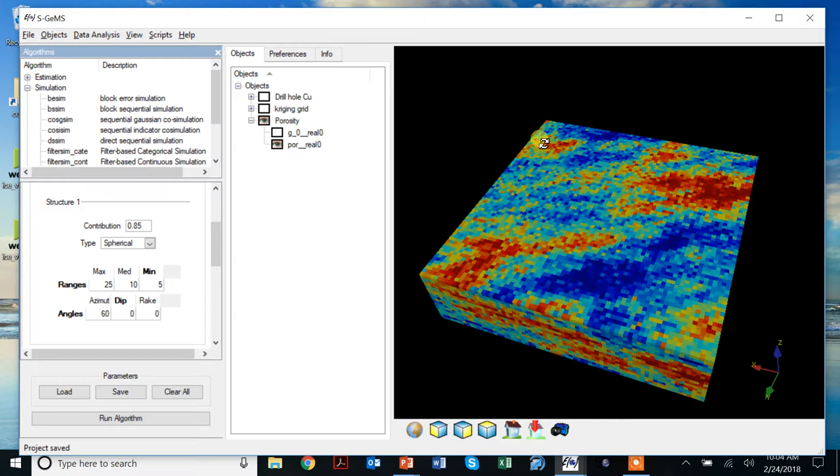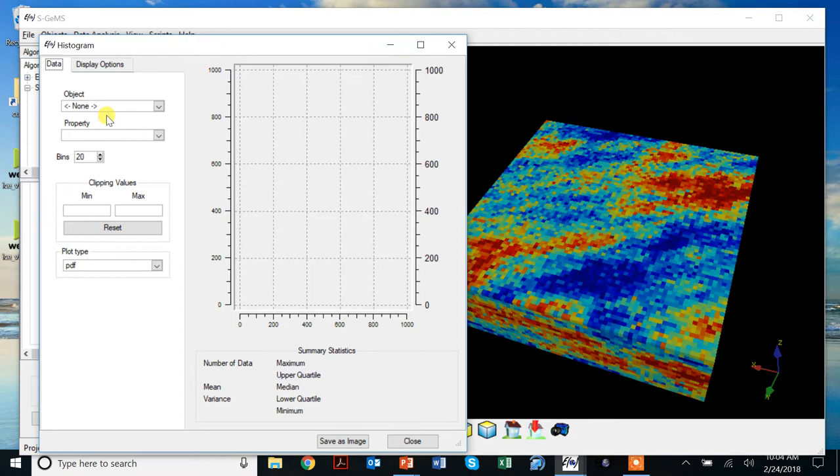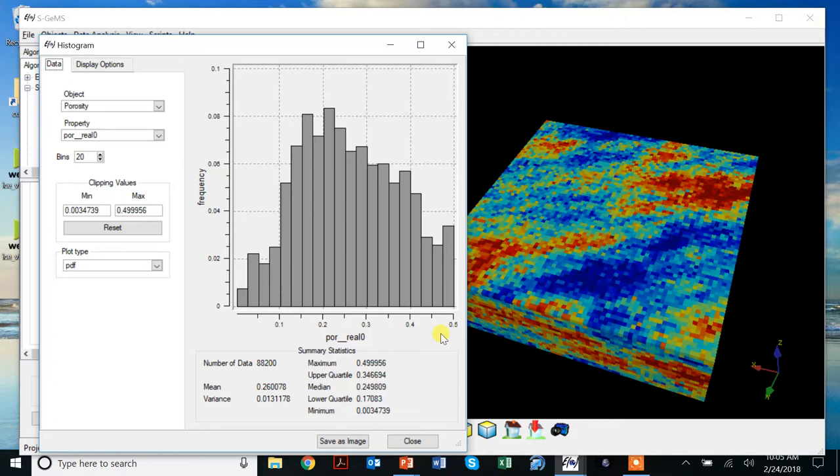Another thing to consider is the histogram. We look at the histogram of porosity. We need to look at the variance. Remember, the variance will be related to the sill, so it's good to remember this number already.